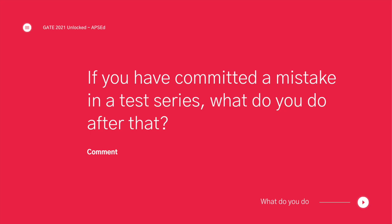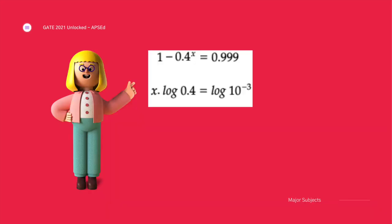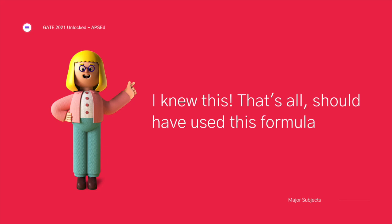I have a question for all of you. Let's say you have committed a mistake in a GATE test series — what is the action plan you take after that? Just put it down in the comment section. Some of you might be following the right methods, but most of you might be doing this: as soon as you see the solution of the question you attempted wrong, you just see that this formula is what I should have used, and you move on. But that doesn't help you in the long run.